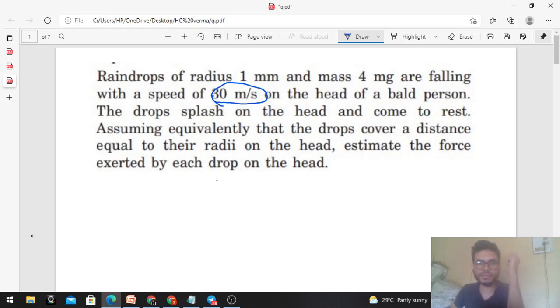So you have radius which is 1 mm, the raindrop is falling on a bald person's head with a speed of 30 meter per second. You have to find the force. Force, if we talk about it, is mass into acceleration, which is 4 mg.